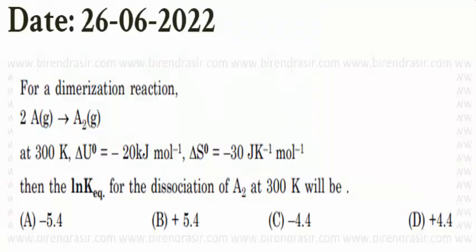for a dimerization reaction, 2A gas giving A2 gas at 300 Kelvin, the delta U0 is minus 20 kilojoule per mole, delta S0 minus 30 joule per Kelvin per mole, then the ln K equilibrium for the dissociation of A2 at 300 Kelvin will be.